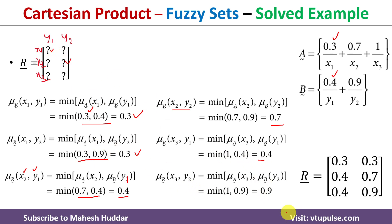Once all values are calculated, we assemble them into the fuzzy relation. The fuzzy relation contains six elements — the six positions in the matrix — and these are their respective membership values. This is how we perform the cartesian product on given fuzzy sets. I hope the concept of cartesian products in fuzzy sets is clear.